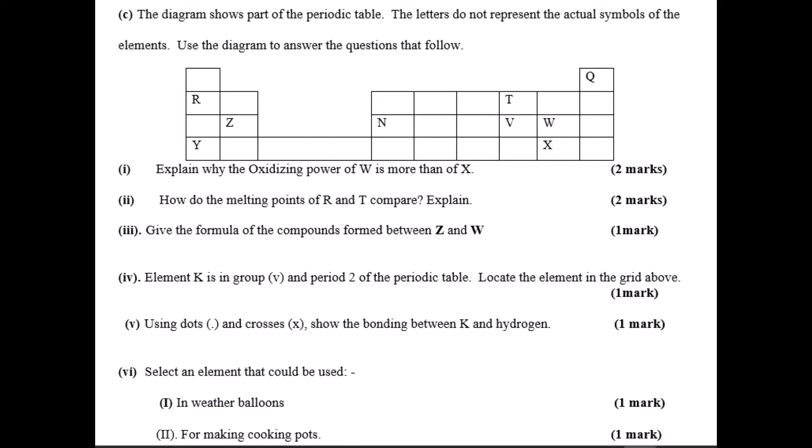Explain why the oxidizing power of W is more than that of X. How do the melting points of R and T compare? Give the formula of the compound formed between W and Z. You're given that element K is in group 5 period 2. Indicate it on the grid, then using dots and crosses to represent electrons, show the bonding in the compound formed between K and hydrogen. Select the elements that could be used in weather balloons and for making cooking pots.